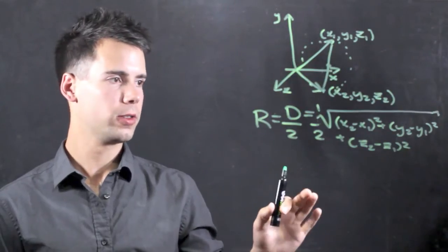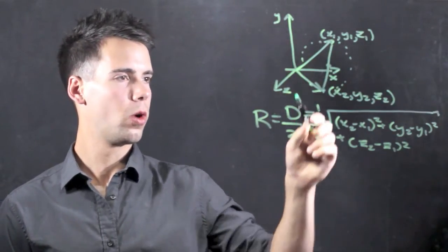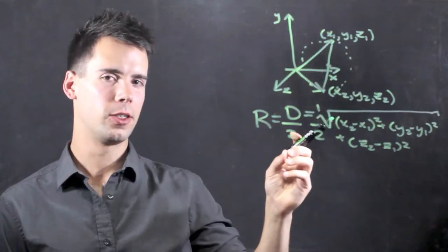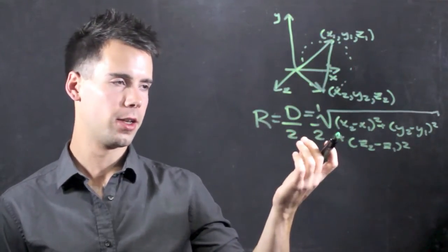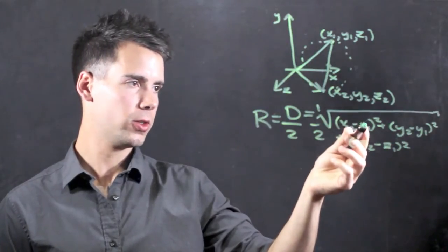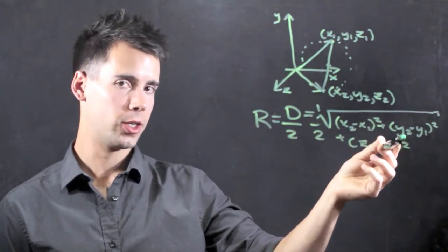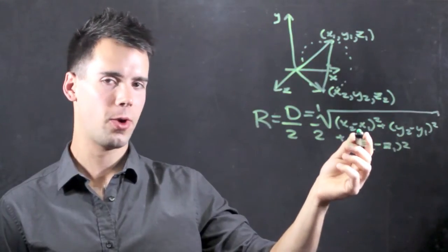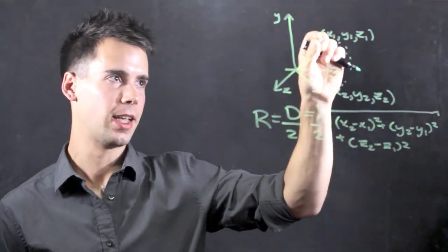Now, to make a little sense of this equation, we can think what if these points were in the exact same location? What would be the distance between them over 2, or the radius? In that case, we would have x2 equals x1, so we would have 0 plus y2 minus y1, which would be 0, and z2 minus z1, which is 0. So the radius would be 0 if the points were in the exact same position.